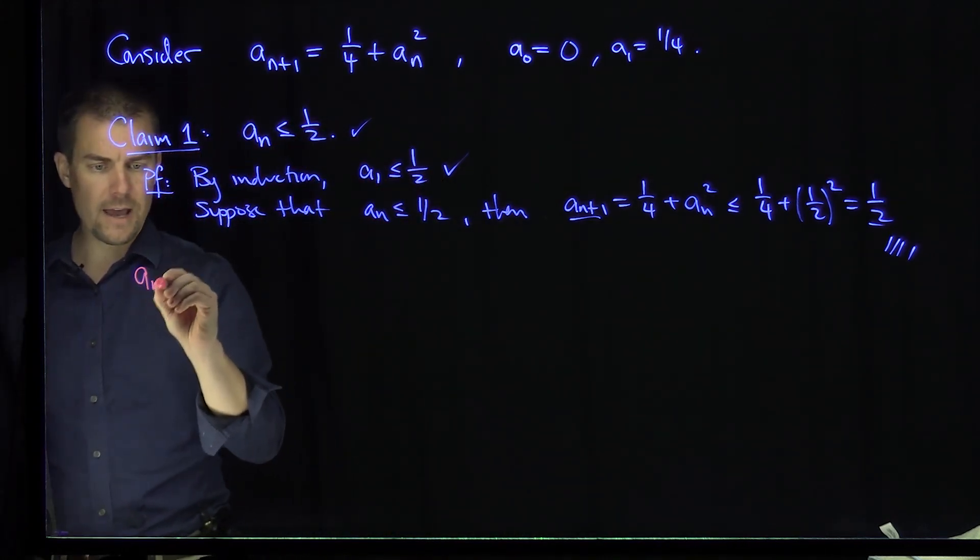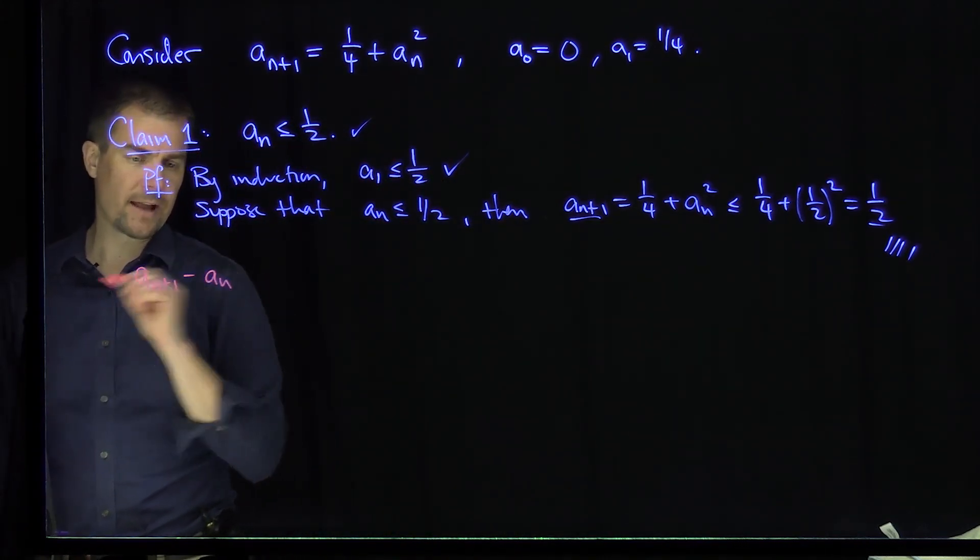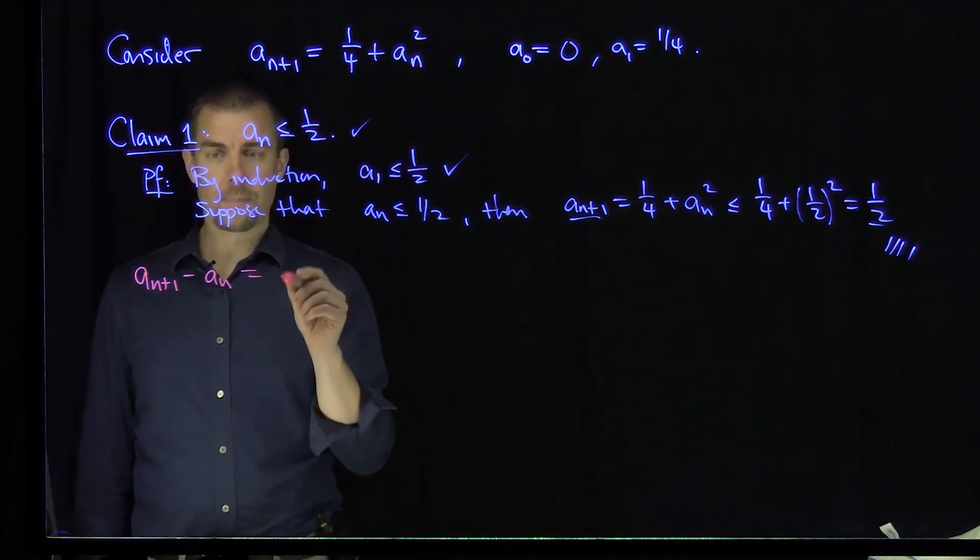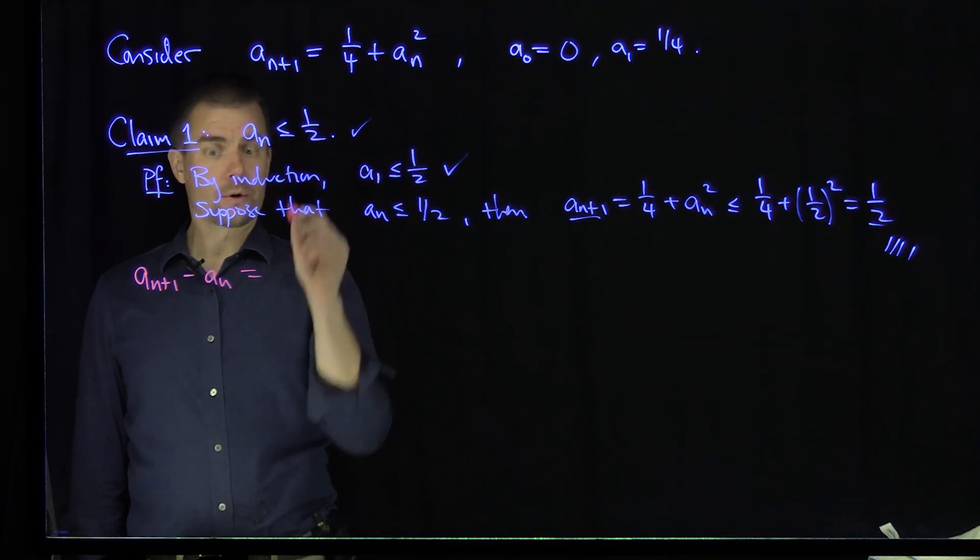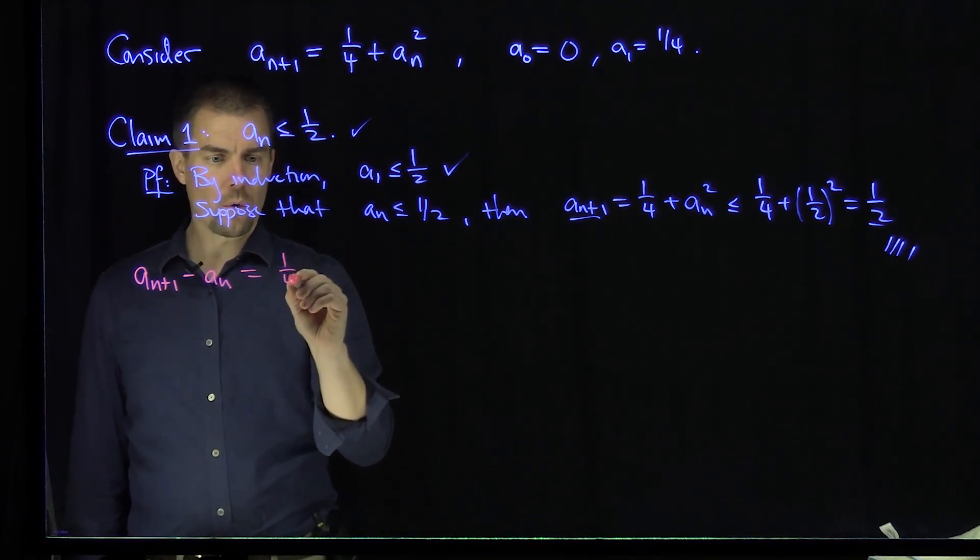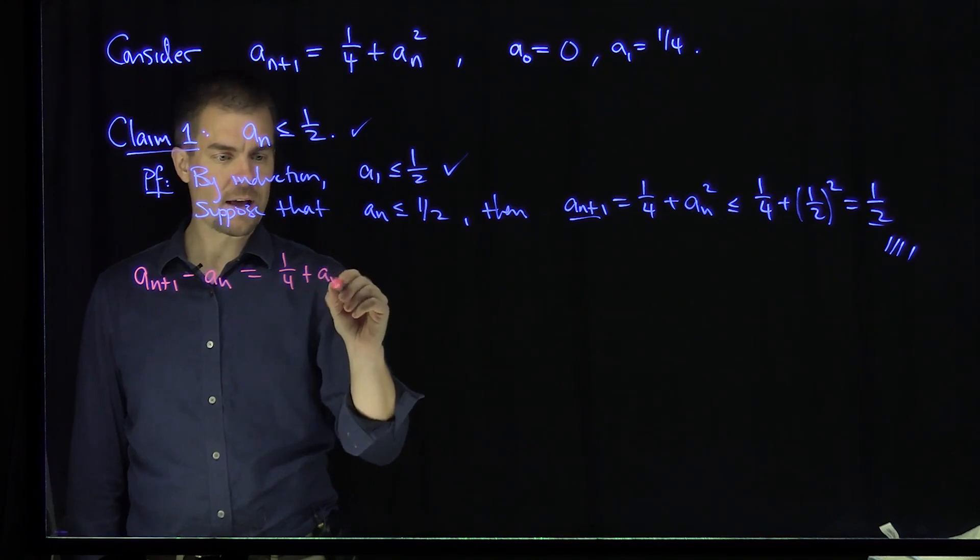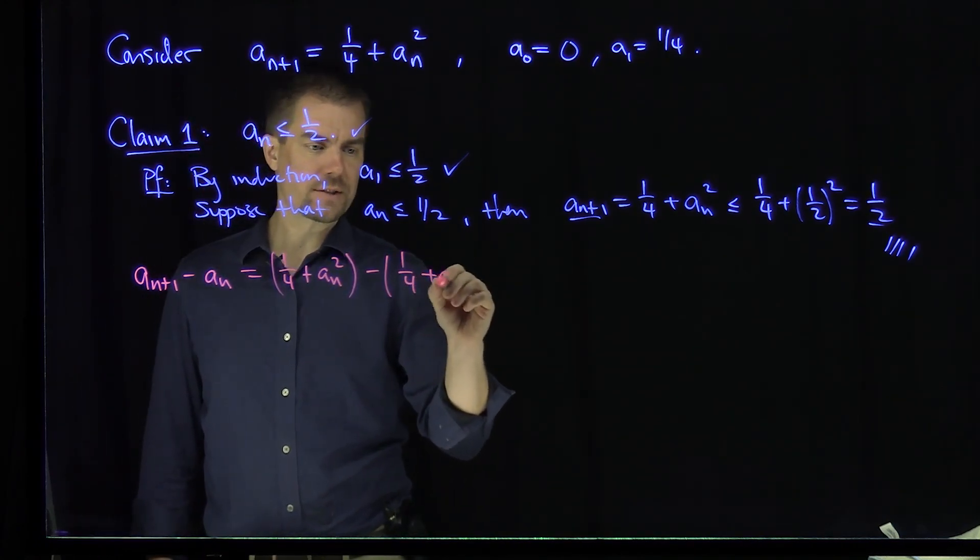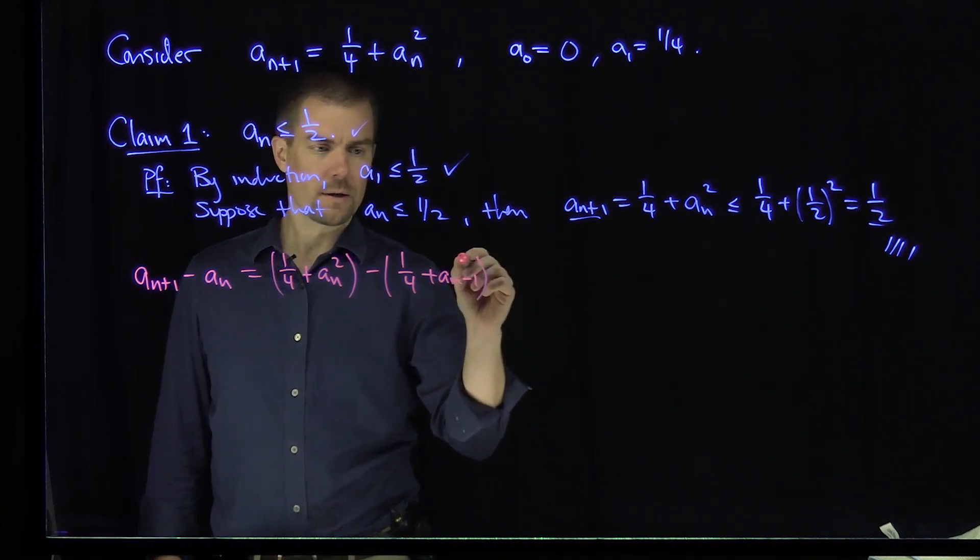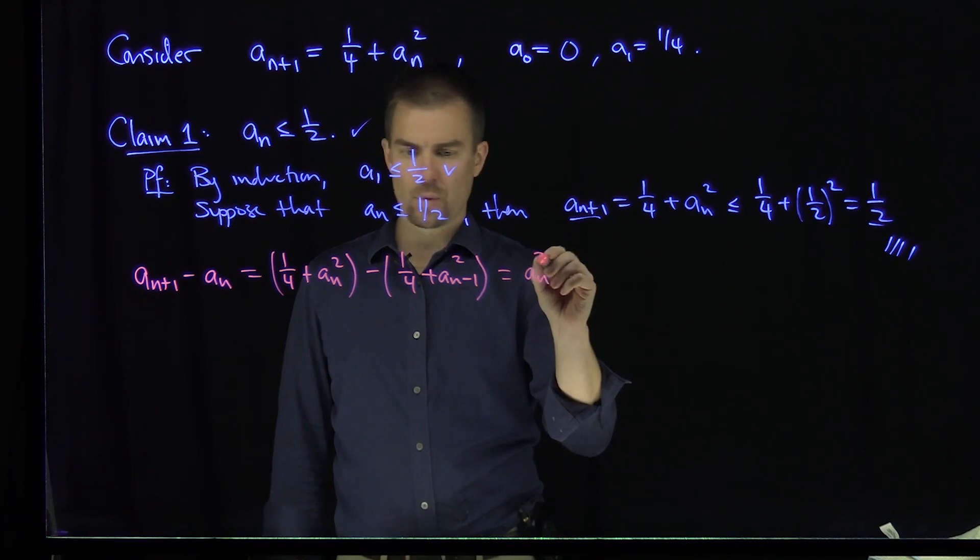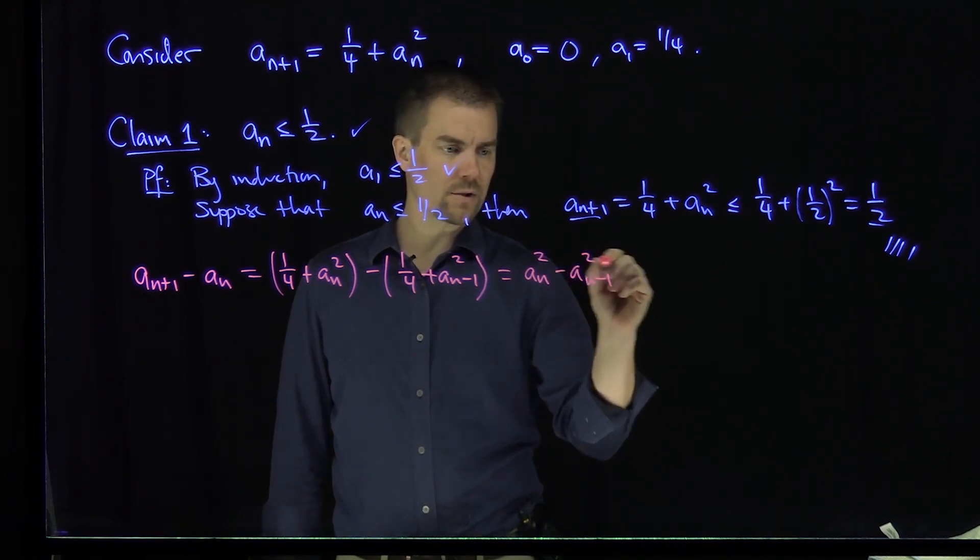So let's look at the difference of a_{n+1} and a_n. So this will be equal to, let's see. I will use our recursion over here. So a_{n+1} will be 1/4 + a_n^2, and I'm going to subtract off a quarter plus a_{n-1}^2. The quarters cancel. And I have a_n^2 - a_{n-1}^2, which is a difference of squares.